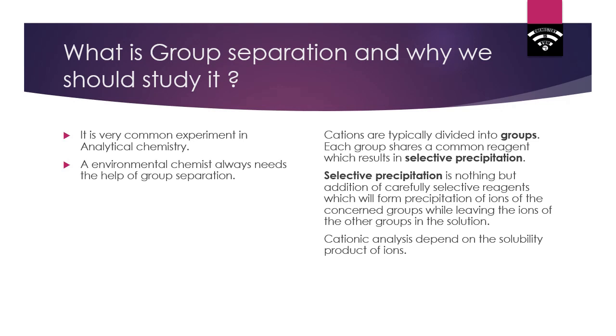Cationic analysis depends on the solubility product of the ion. If the solubility product is greater than the ionic product, the solution is unsaturated and no precipitation will form. And if the solubility product is lower than the ionic product, we can see the precipitate.